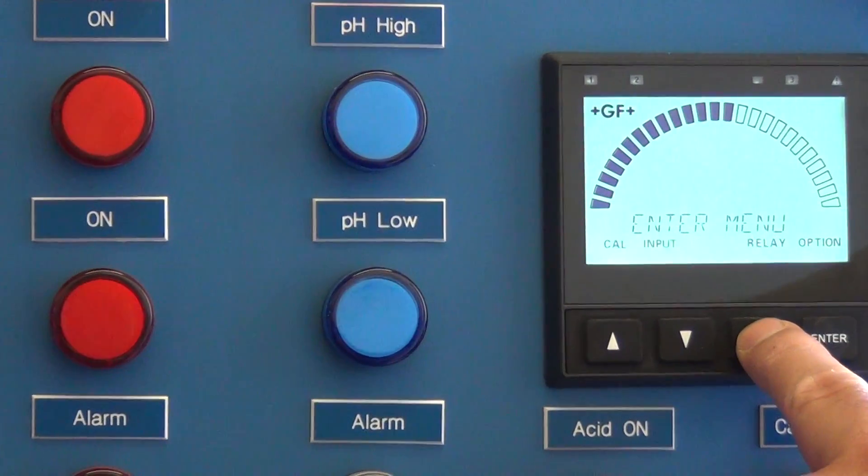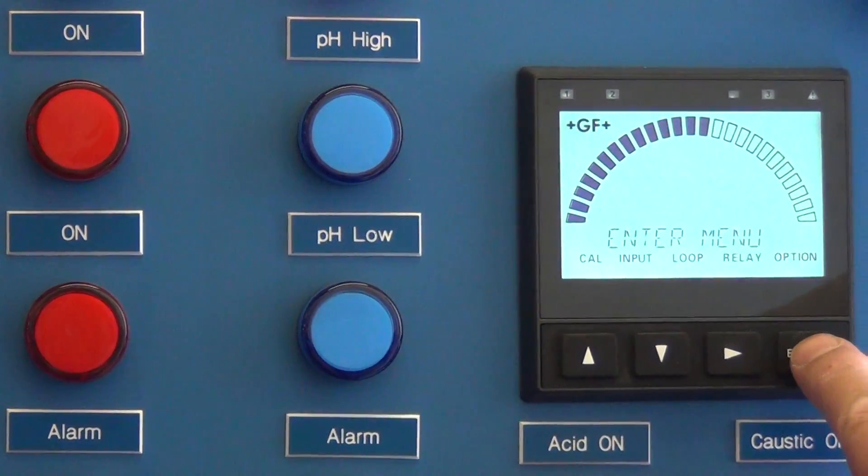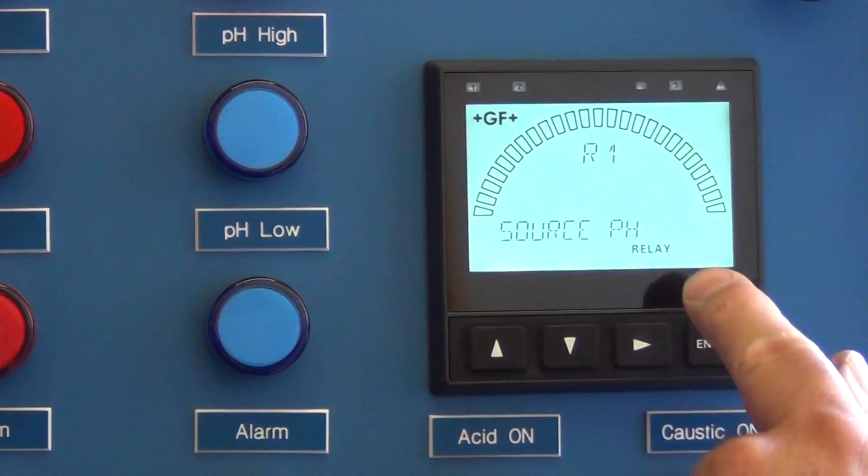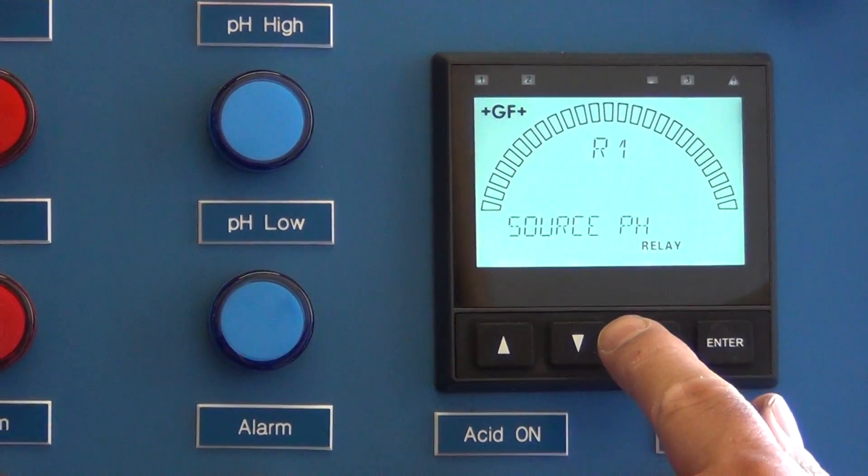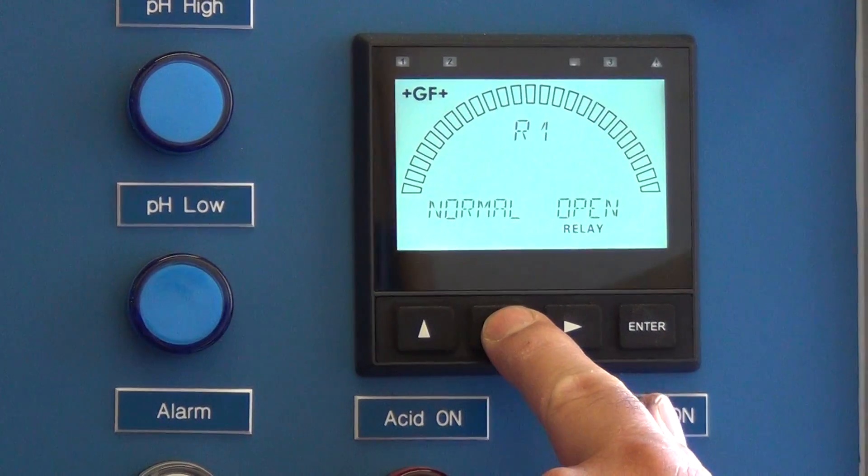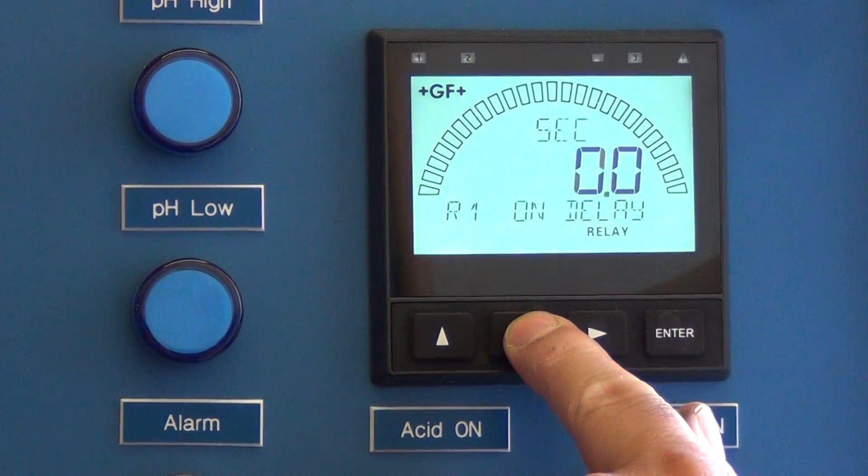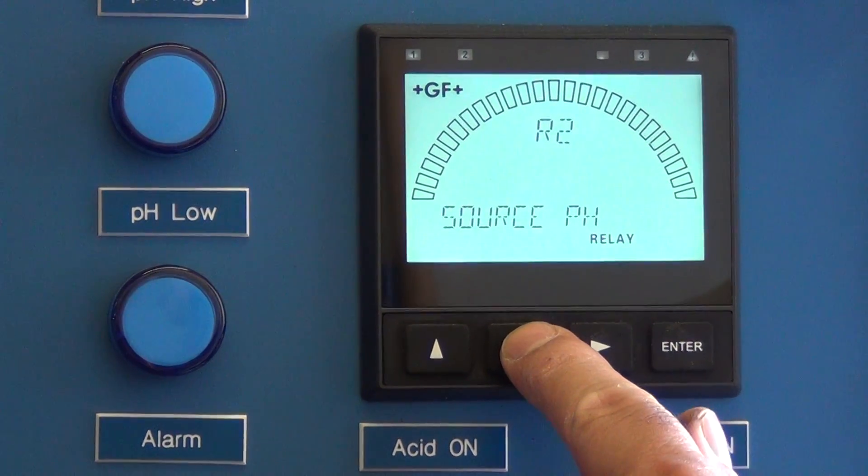We want to go to the relay menu to change the pH setting. R1 is for the high and low pH alarm. R2 is the acid pH setting.